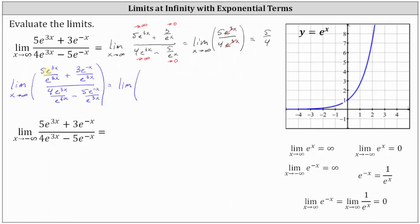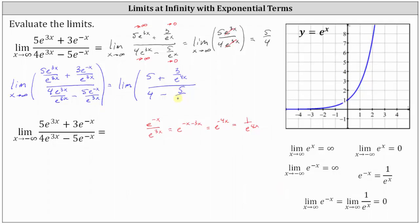Now we simplify. 5e to the 3x divided by e to the 3x is just 5. We need to be a little careful here: when simplifying e to the power of negative x divided by e to the power of 3x, we subtract the exponents, giving us e to the power of negative x minus 3x, which equals e to the power of negative 4x, or equivalently 1 divided by e to the power of 4x. So 3e to the negative x divided by e to the 3x simplifies to 3 divided by e to the power of 4x. In the denominator, 4e to the 3x divided by e to the 3x is 4, and minus 5e to the negative x divided by e to the 3x gives us 5 divided by e to the power of 4x.